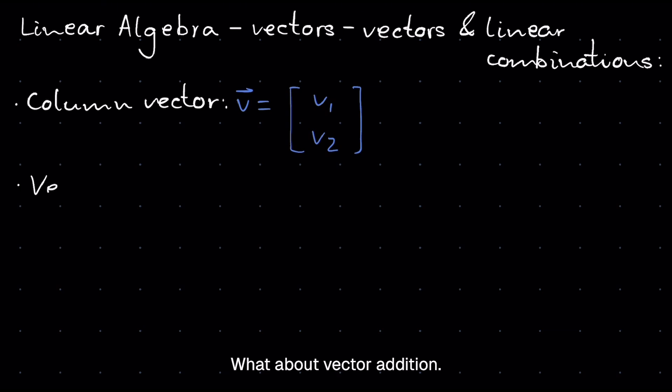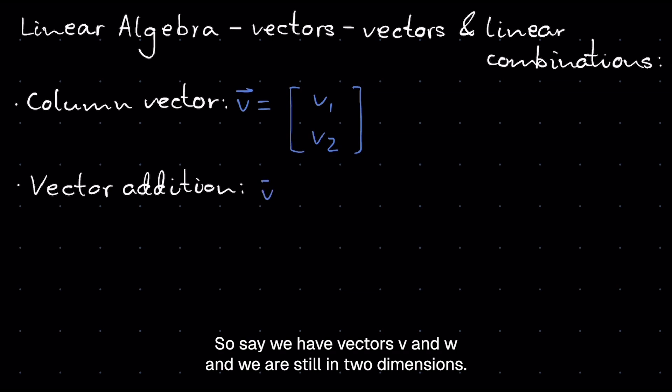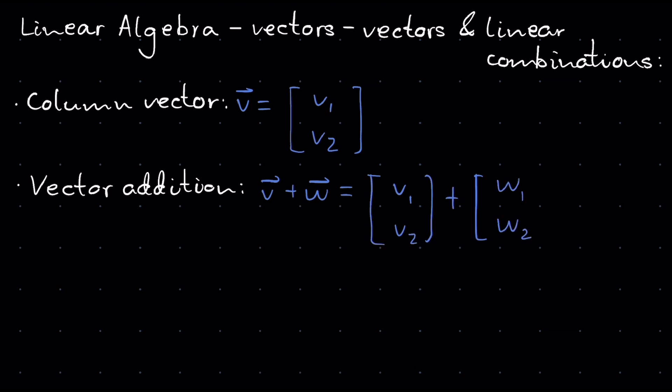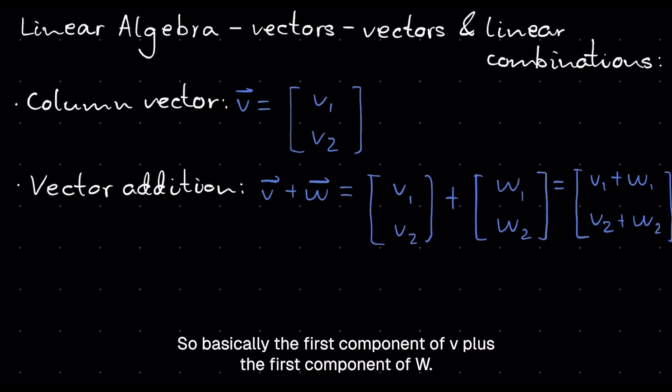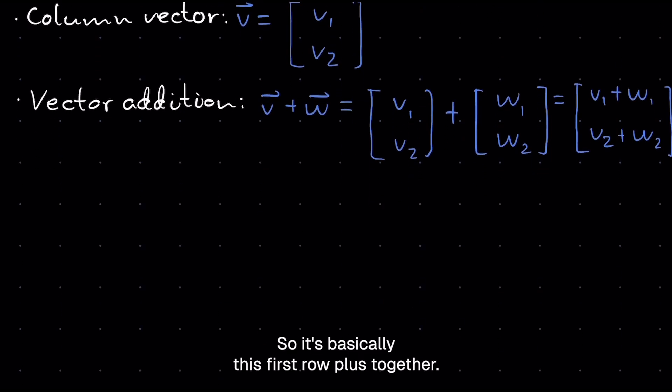What about vector addition? How do we add vectors? So say we have vectors V and W, and we are still in two dimensions. So we have V1, V2 plus W1, W2. This is very simple. This is simply V1 plus W1 and V2 plus W2. It's basically the first component of V plus the first component of W, and the second component is the second component of V plus the second component of W. So it's basically this first row plus together and the second row plus together.